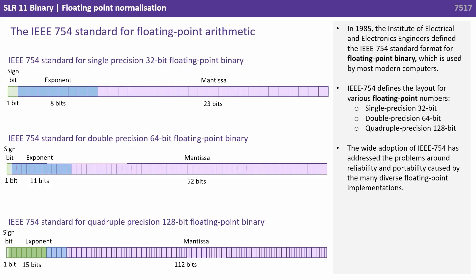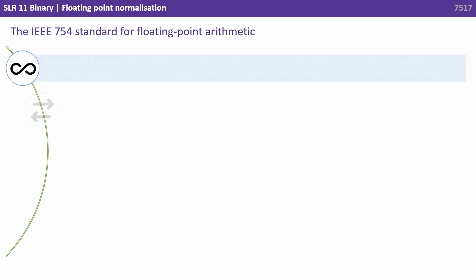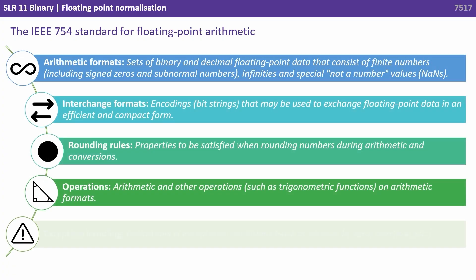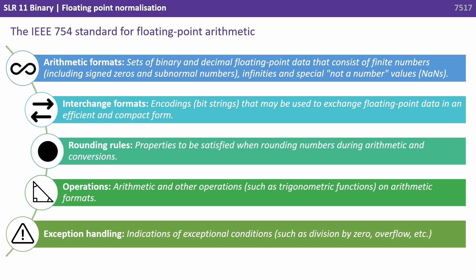In 1985, the Institute of Electrical and Electronic Engineers defined the IEEE 754 standard format for floating point binary, which is used by most modern computers. IEEE 754 defines the layout for various floating point numbers: single precision 32 bits, double precision 64 bits, and quadruple precision 128 bits. The wide adoption of IEEE 754 has addressed the problems around reliability and portability caused by the many diverse floating point implementations, establishing an agreed set of principles and ways of dealing with all these previous problems.